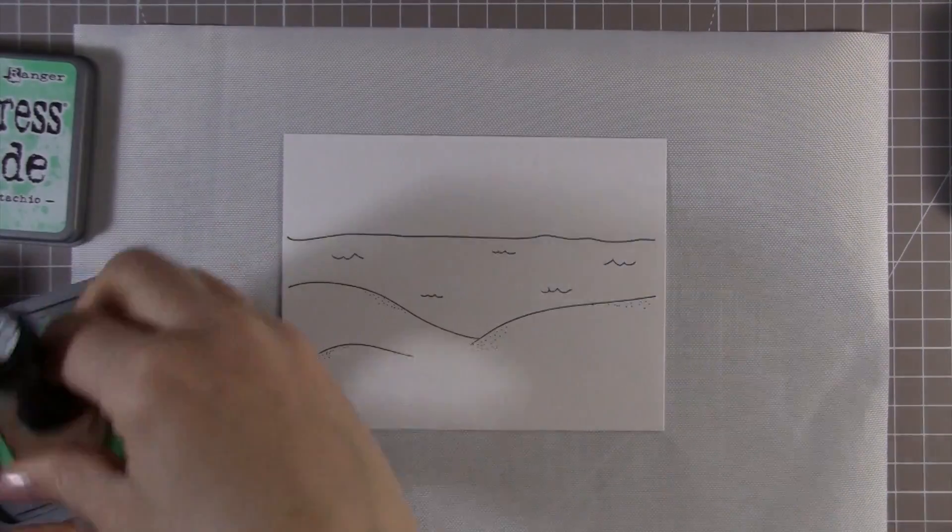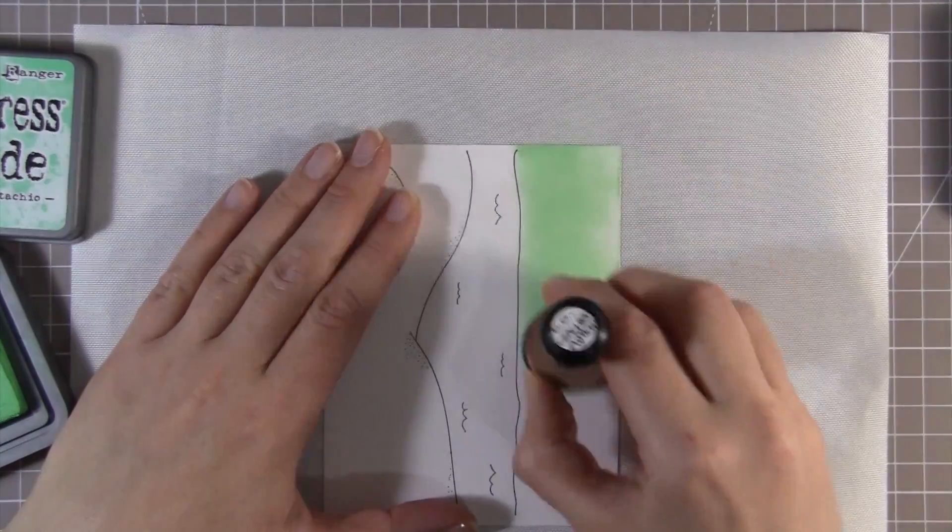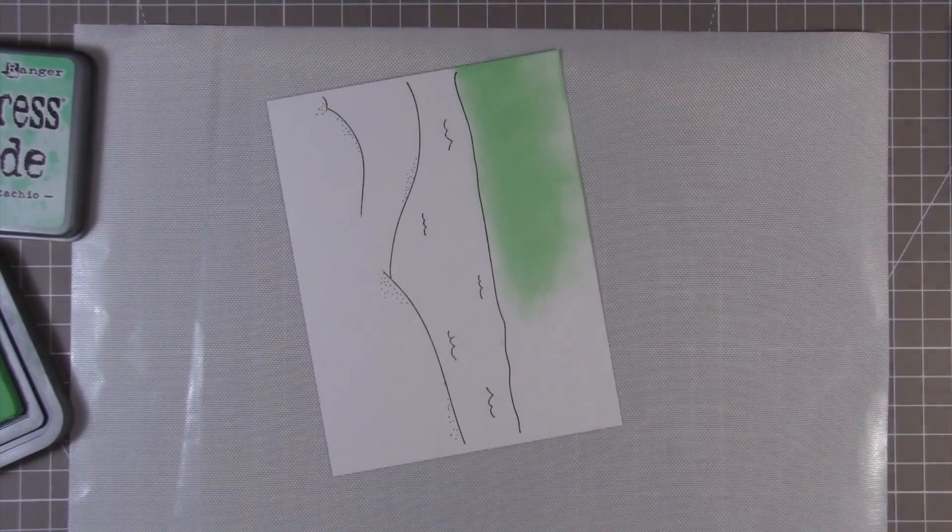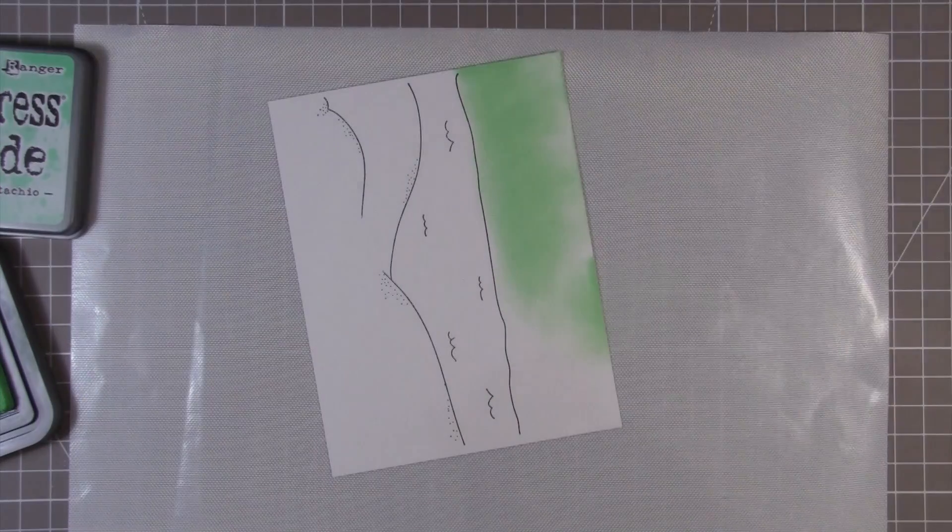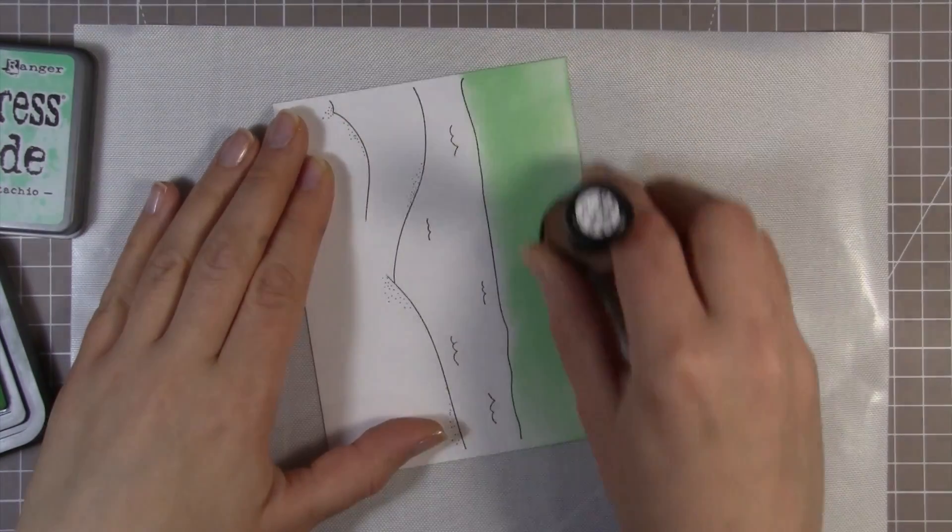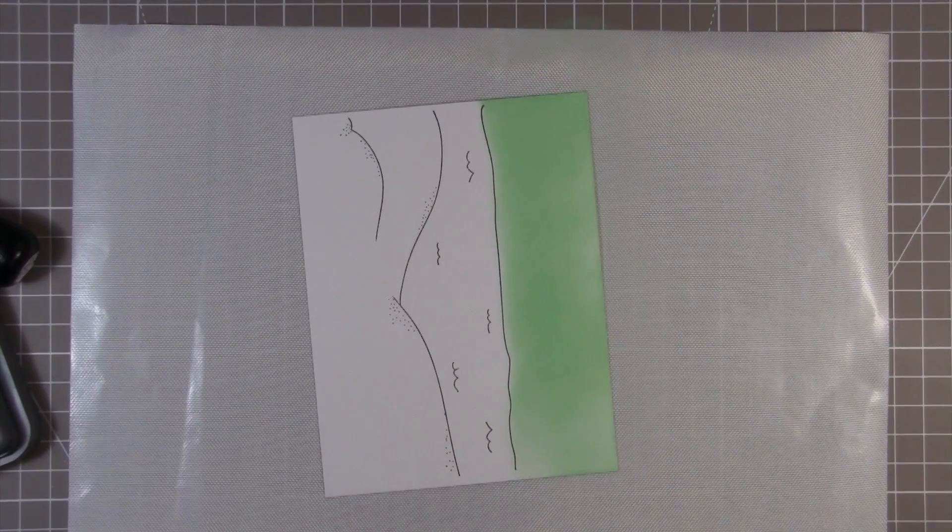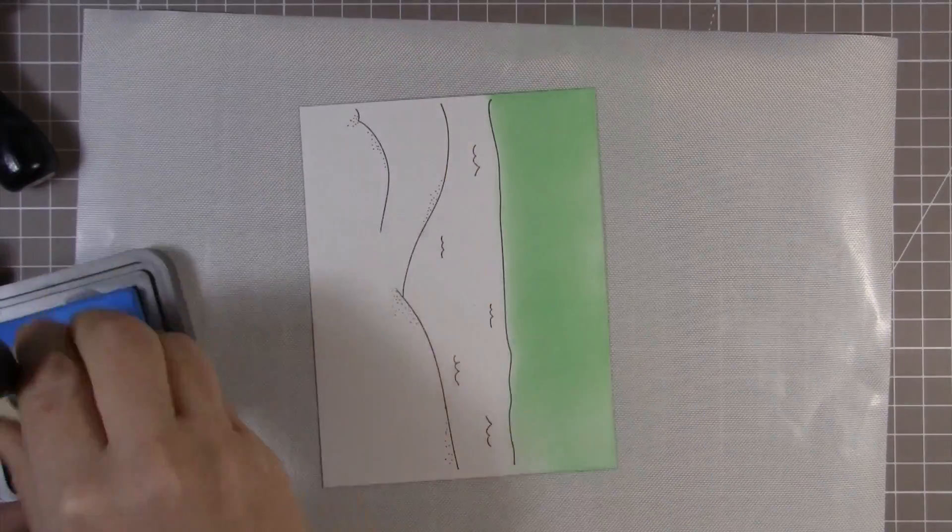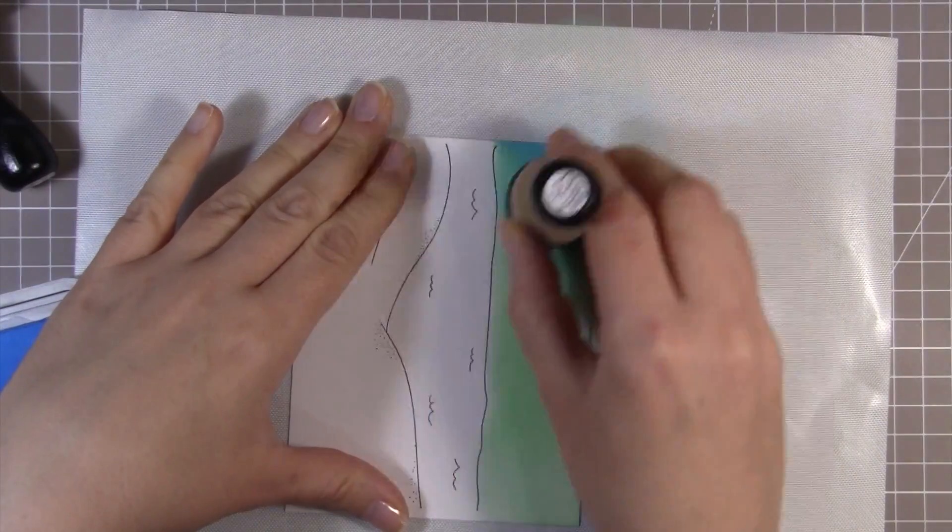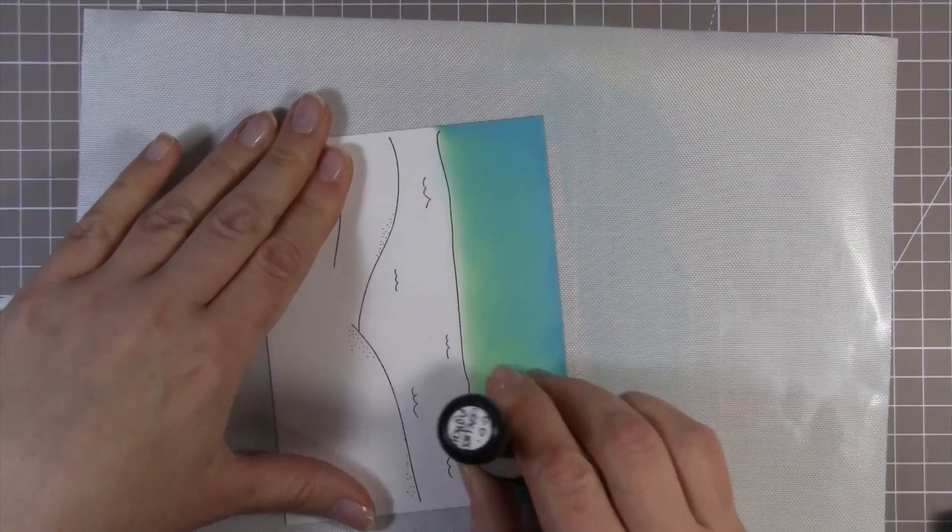Now you can see that I've grabbed my Distress Oxides and at the moment I haven't masked this. You will see shortly that I realized that actually in order to do this I do need to make a mask. I was trying to be lazy and kind of avoid making a mask. I was like yeah it's going to be fine you can just be really careful.